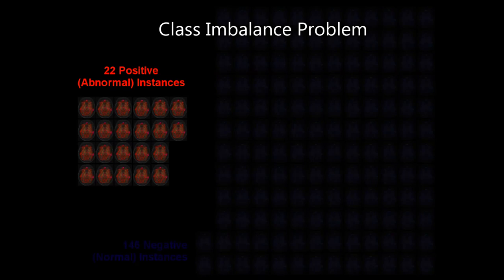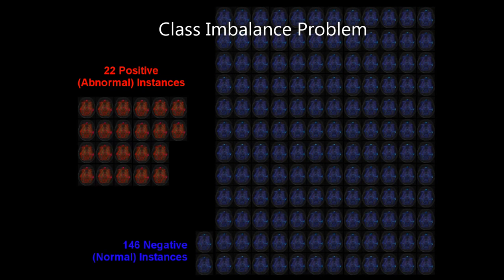One major hurdle for any supervised classification task is that of imbalanced training data. In our dataset of scans of very preterm infants acquired at the BC Children's Hospital in Vancouver, this class imbalance problem is severe. While we only have 22 scans of subjects with abnormal motor function, we have 146 scans with normal motor function.